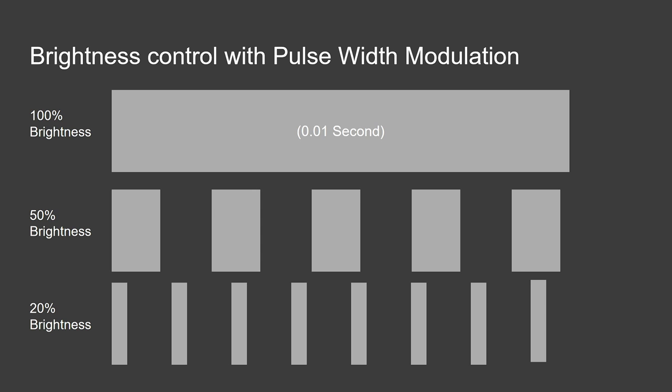And if you wanted 20% brightness, then you'd just turn them off, on and off really really quickly but with a bigger gap in between. And because your human eye can't see that quickly, instead of seeing it as an image flashing on and off really quickly, it will perceive it as a brighter or a dimmer image.